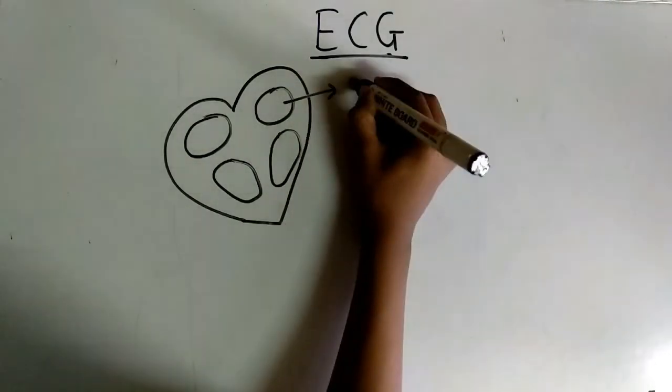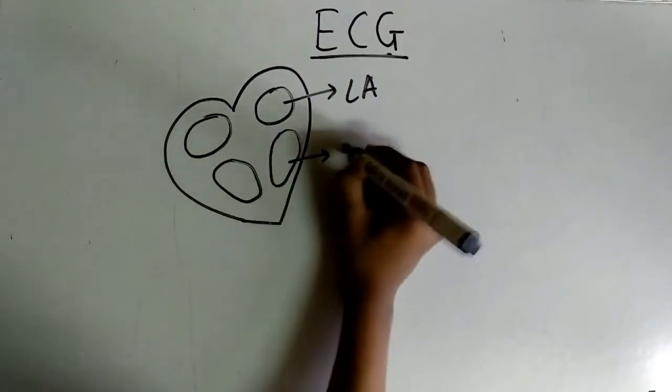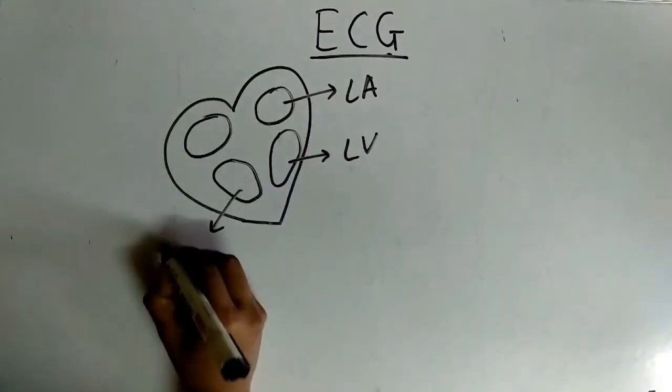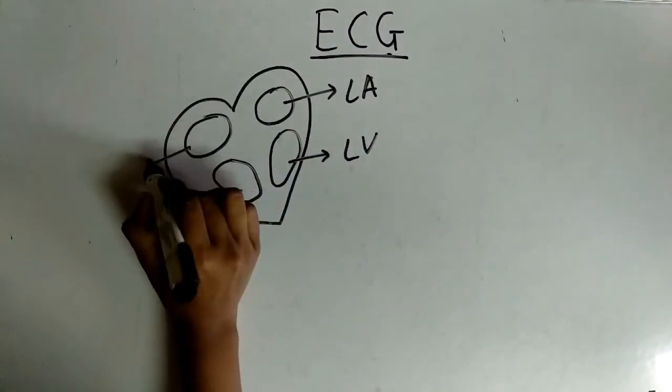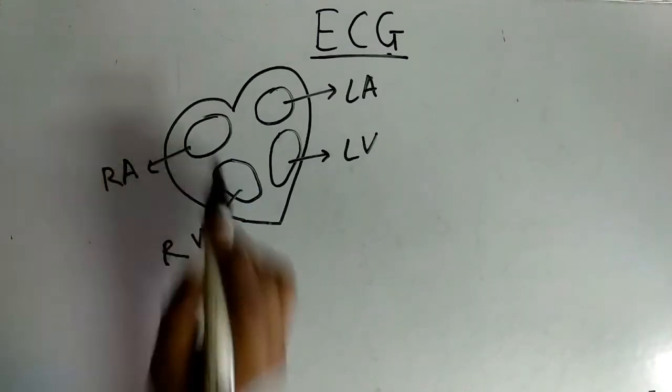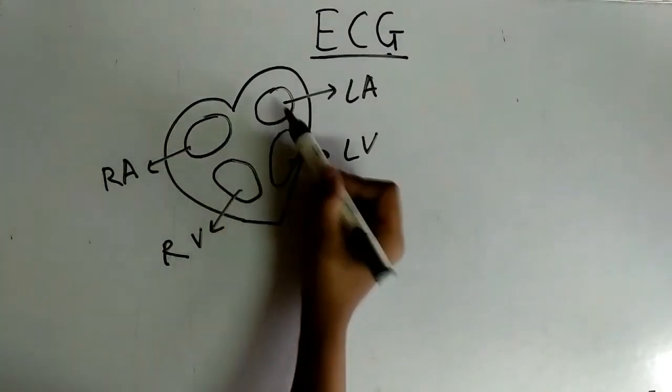So this is left atria, left ventricle, this is right ventricle, right atria. These are the four chambers of heart.